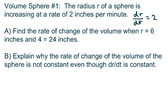And basically we have to find the rate of change twice. So when r is 6, and when r is 24 inches. And then we also have to explain why the rate of change of the volume of the sphere is not constant, even though the derivative of r is constant.